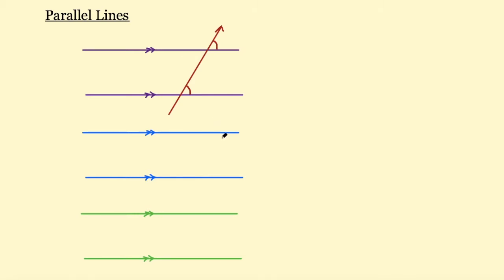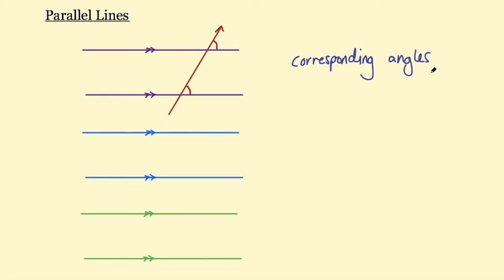So this is our first key fact about parallel lines: these two angles are equal. What is the name we give to these angles? Well, they're kind of in the same spots - we could say they're corresponding to each other, so we call these corresponding angles. If you're given this angle and asked what the other angle equals, if this is 80 degrees then the second angle will also be 80 degrees because they're corresponding angles. Memorizing that terminology is all you need to write for your reasoning, and sometimes you'll actually be given a mark for using the correct terminology.